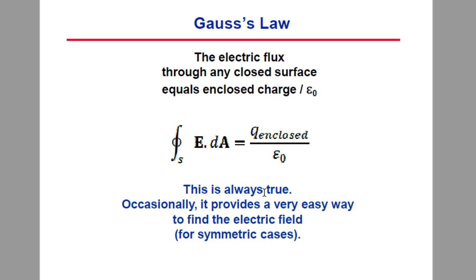Gauss's Law states that the total electric flux passing through any closed surface is equal to 1/ε₀ times the charge enclosed by the surface. That is: ∮ E · dA = Q_enclosed / ε₀. Where Q_enclosed is the total charge enclosed by the closed surface, and ε₀ is the permittivity of free space, assuming the charge is placed in free space.